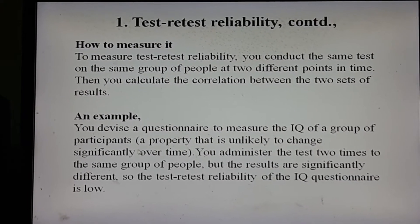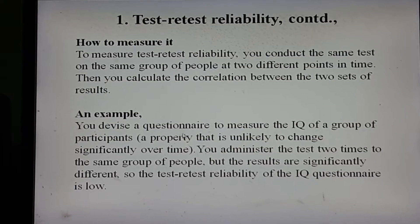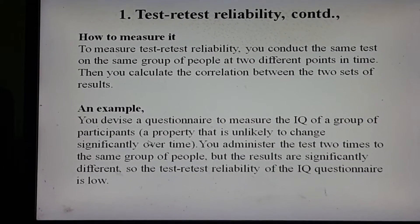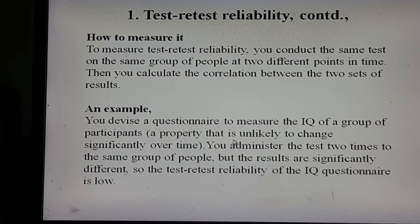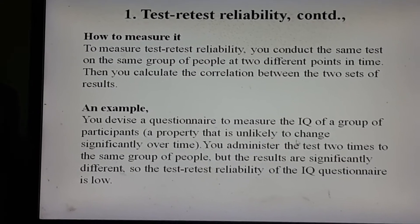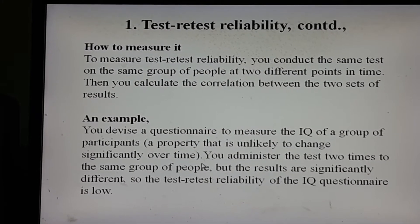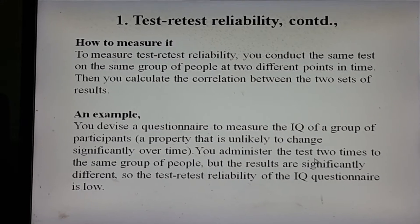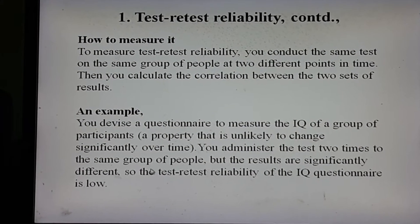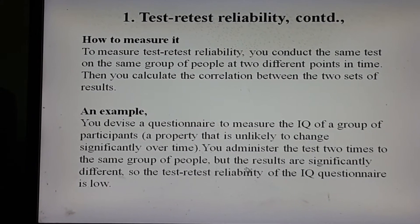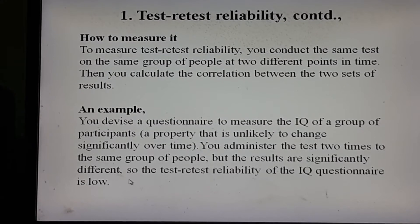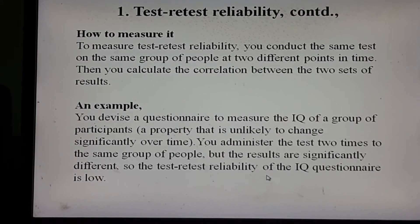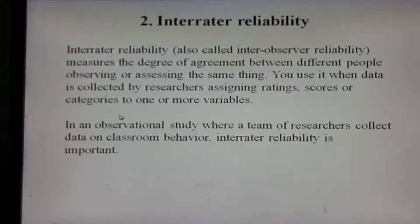For example, you devise a questionnaire to measure the IQ of a group of participants — a property that is unlikely to change significantly over time. You administer the test twice to the same group of people, but the results are significantly different. So the test-retest reliability of the IQ questionnaire is low.